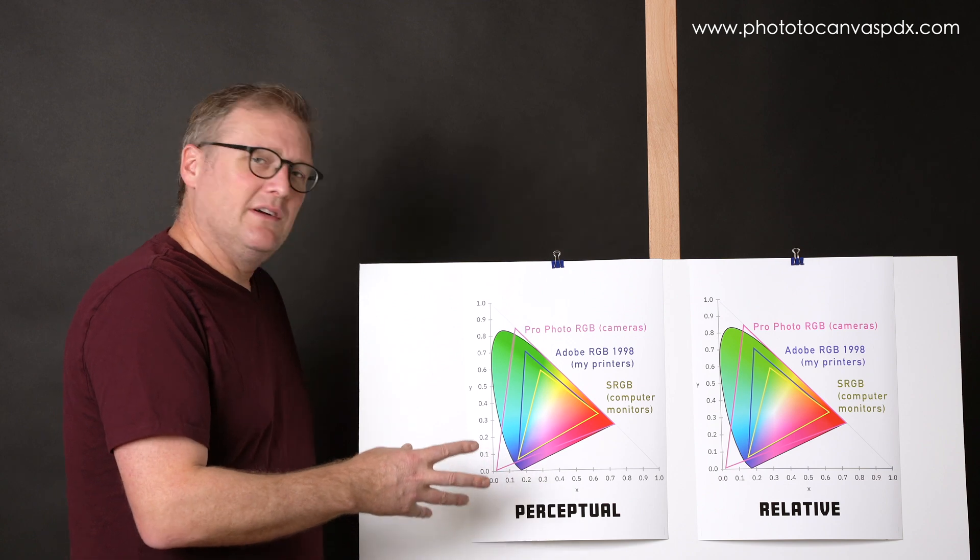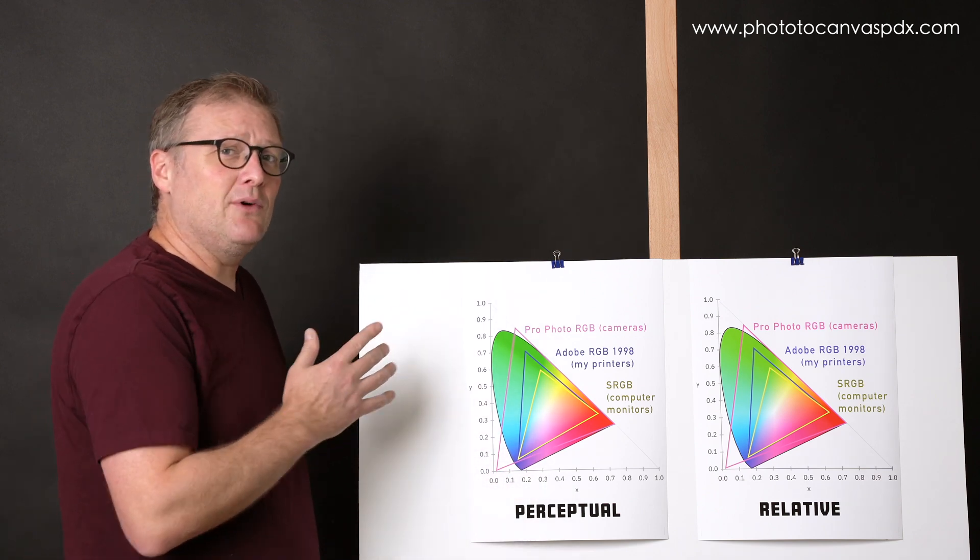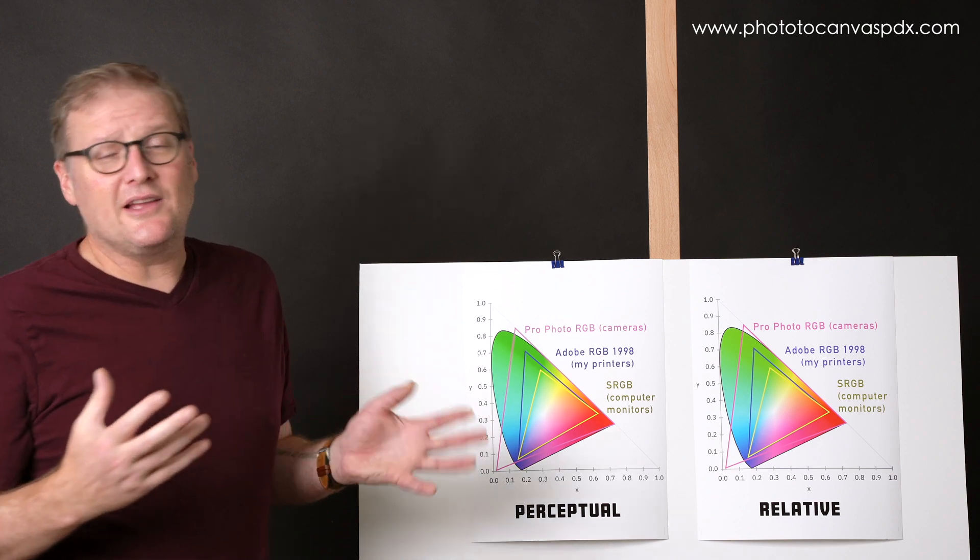So in perceptual, if you have few colors out of gamut, just a couple, it's going to change everything and you don't want that.